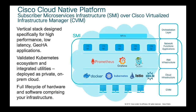Moving to Cisco's cloud native architecture, we have the Subscriber Microservices Infrastructure, or SMI, running over Cisco Virtualized Infrastructure Manager (CVIM). It provides a vertical stack design for high performance and low latency. The first stack layer is the infrastructure — the OpenStack layer, which is created and deployed by CVIM.